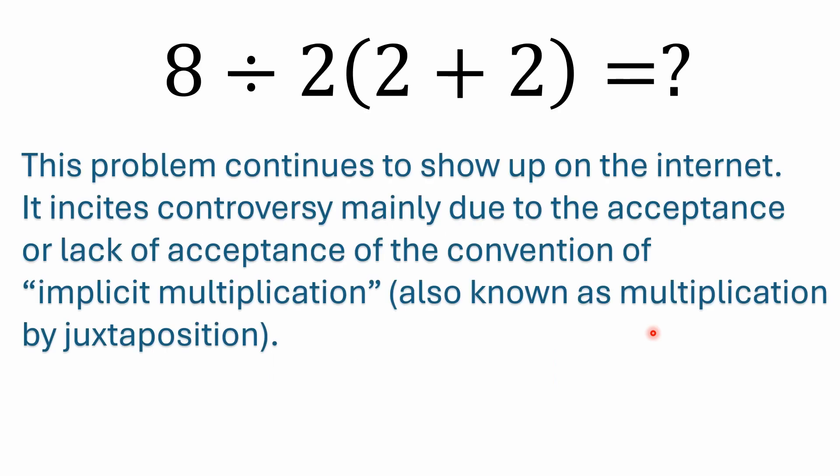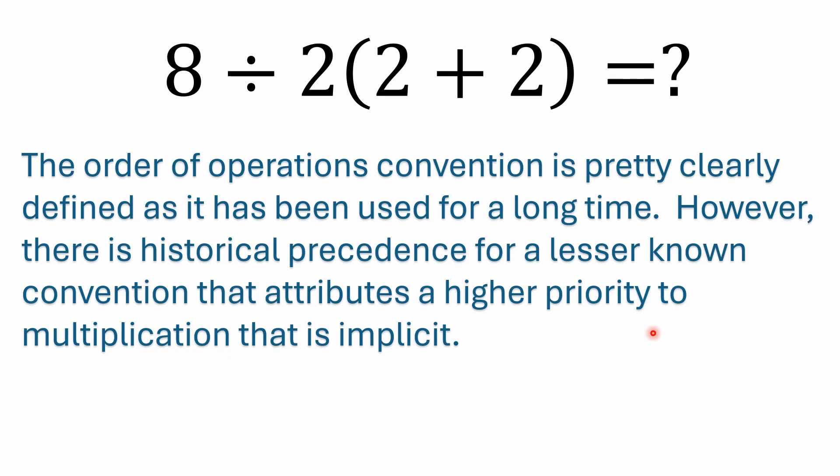As I said before, this problem continues to show up on the internet. It incites a lot of controversy. It's mainly due to the acceptance or lack of acceptance of a convention that has some historical precedence known as implicit multiplication, also known as multiplication by juxtaposition. But the Order of Operations Convention, as it's interpreted today, the modern interpretation of it, is pretty clear and it's been used for a long time. But as I said, there's been some historical precedence in the past for what I would think is a lesser known convention that attributes a higher priority to multiplication that's implicit.